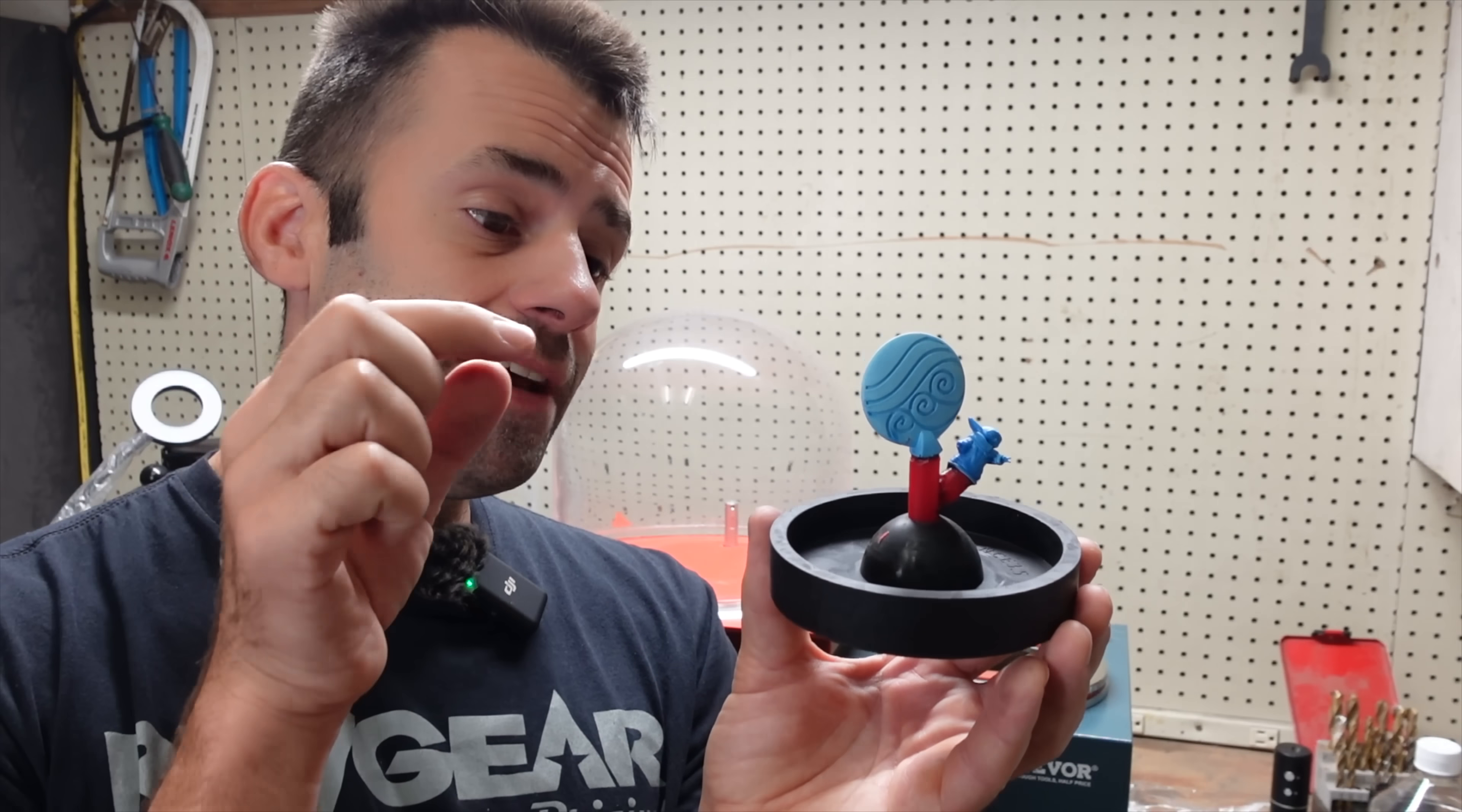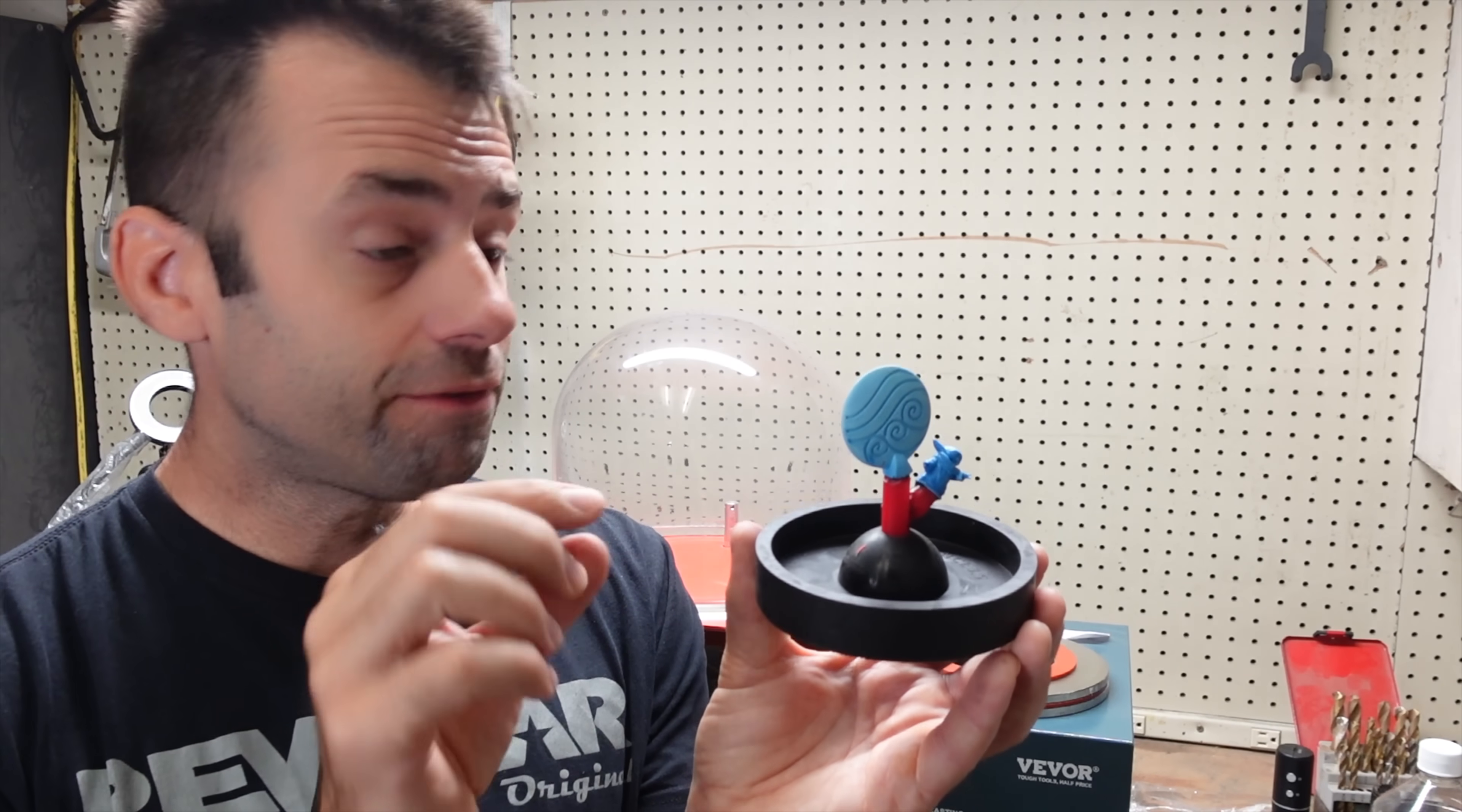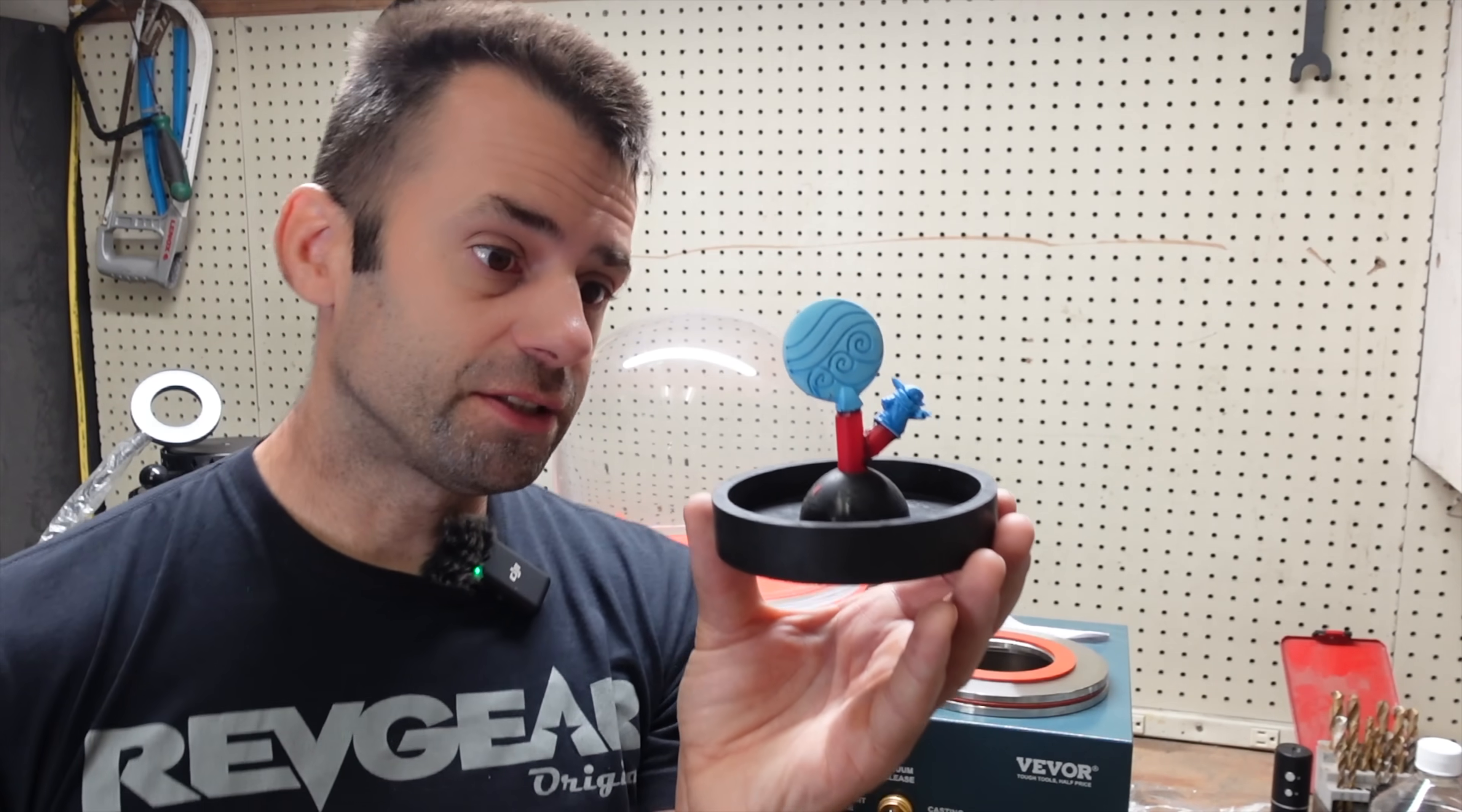Now the sprue kind of fits in this hole a little loose. The only thing that worries me is investment can get in the tiniest little gap and if you get little thin fins of investment they can flake off and break off and end up in your casting. So I'm going to melt some wax around this just so there's no gap at all so it's not loose, so no investment can get in underneath there and then we'll mix up the investment.